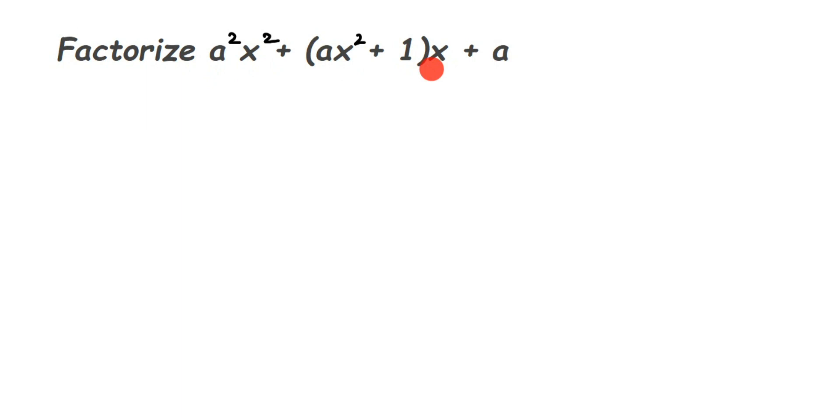Common factors means if you see the first term and the last term, we have 'a' common. In the third term we have (ax² + 1) into x. If I open the bracket I'll get ax³ + x, so it's not gonna make much change. I'm gonna keep the center term like that and take a common factor from the first and last term.